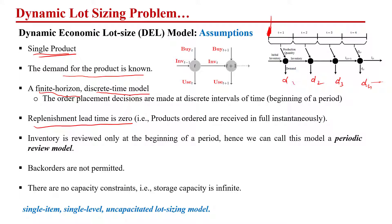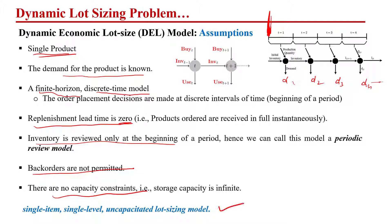For the dynamic lot sizing model, the lead time is zero: if we place an order we get it exactly at that time. Furthermore, inventory is reviewed at the start of every time period, which makes it a periodic review model — unlike the basic EOQ which is a continuous review model. Back orders are not allowed, and there is no capacity restriction: whenever we order or produce, we assume we have enough capacity. This model is also known as the single item, single level, uncapacitated lot sizing model.